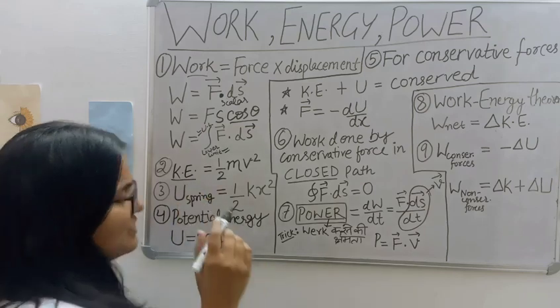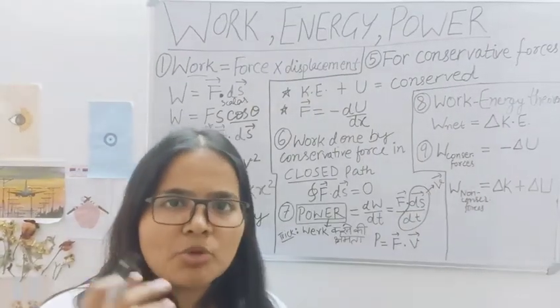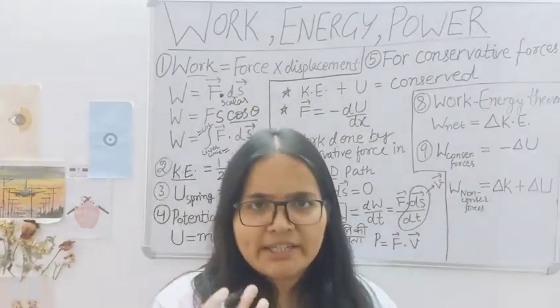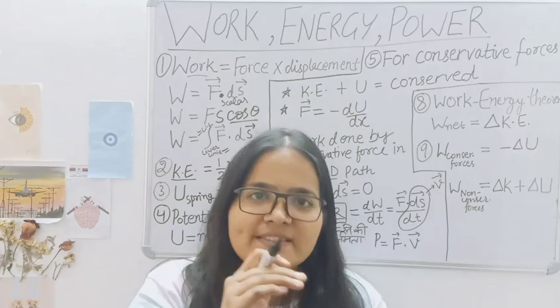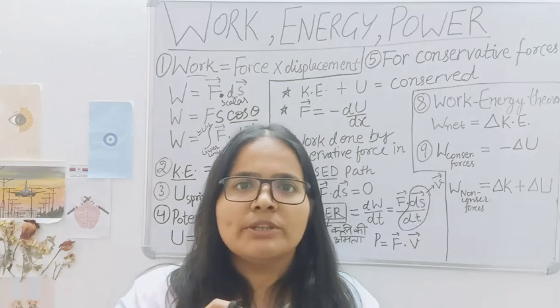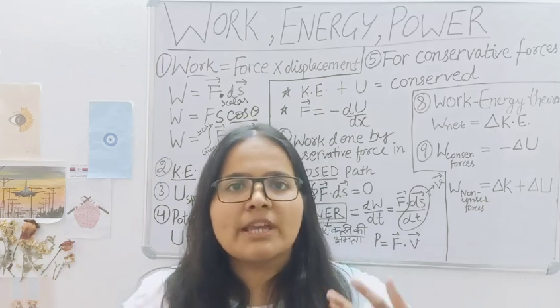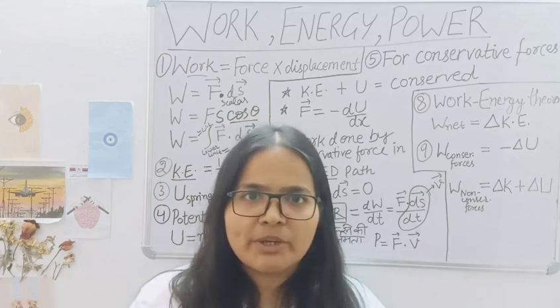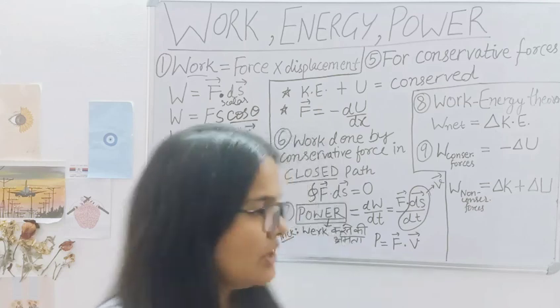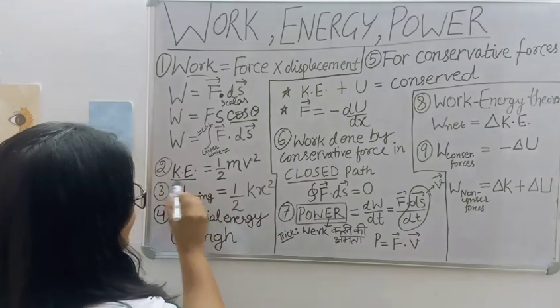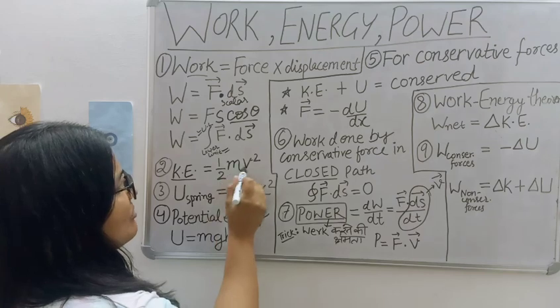Next is kinetic energy. Kinetic energy is called kinetic energy and the rest is called potential energy. When something is in motion, it is called kinetic energy and when something is in rest, it is called potential energy. So this is our motion. It is called half mv square.